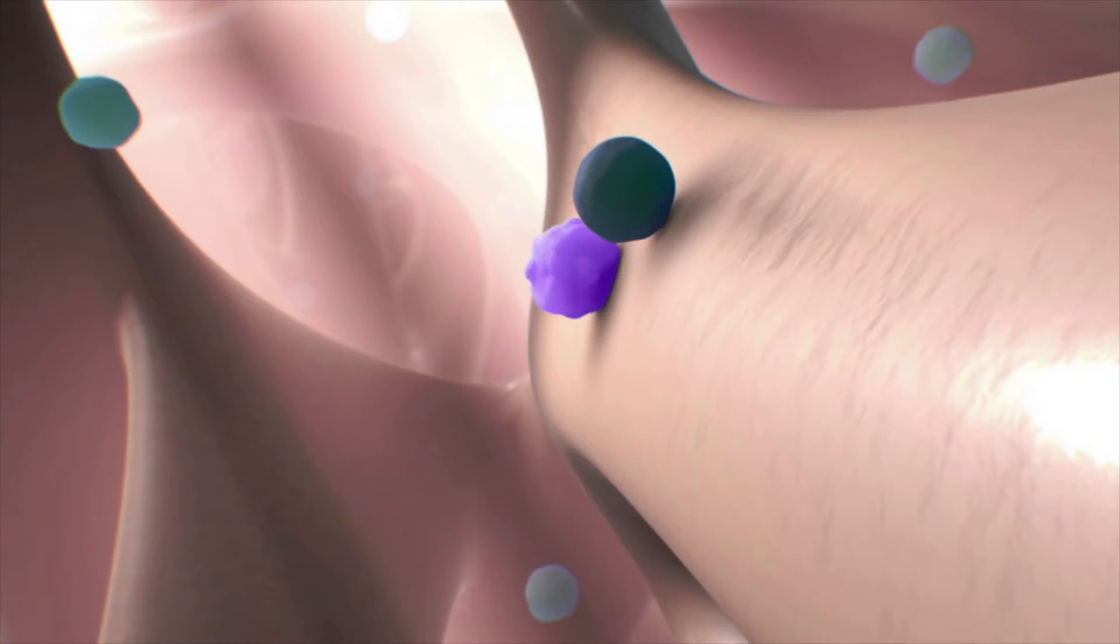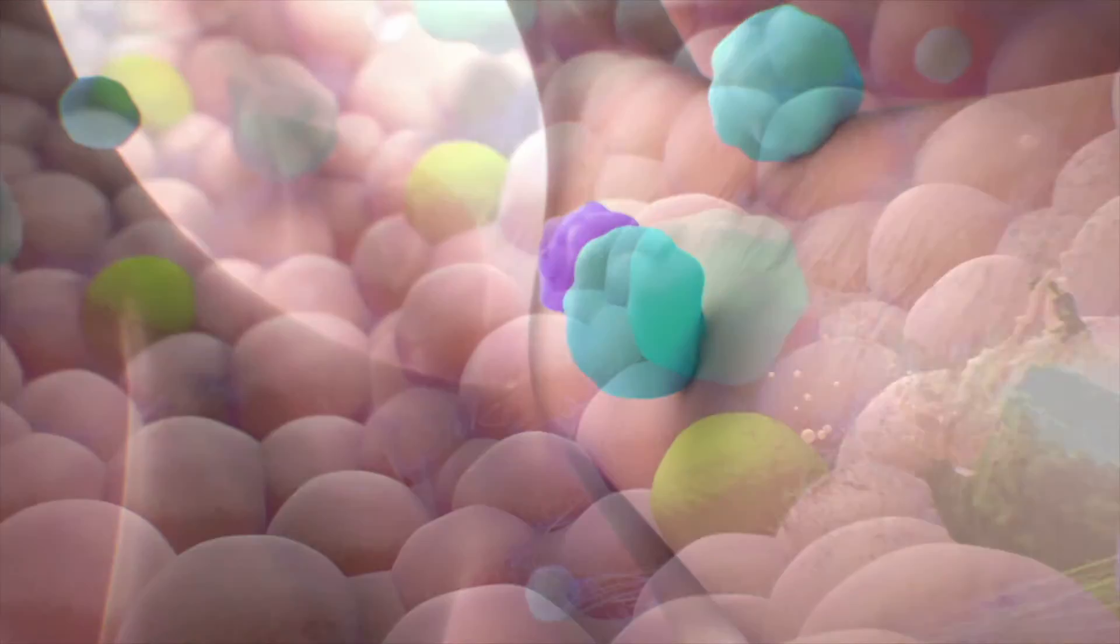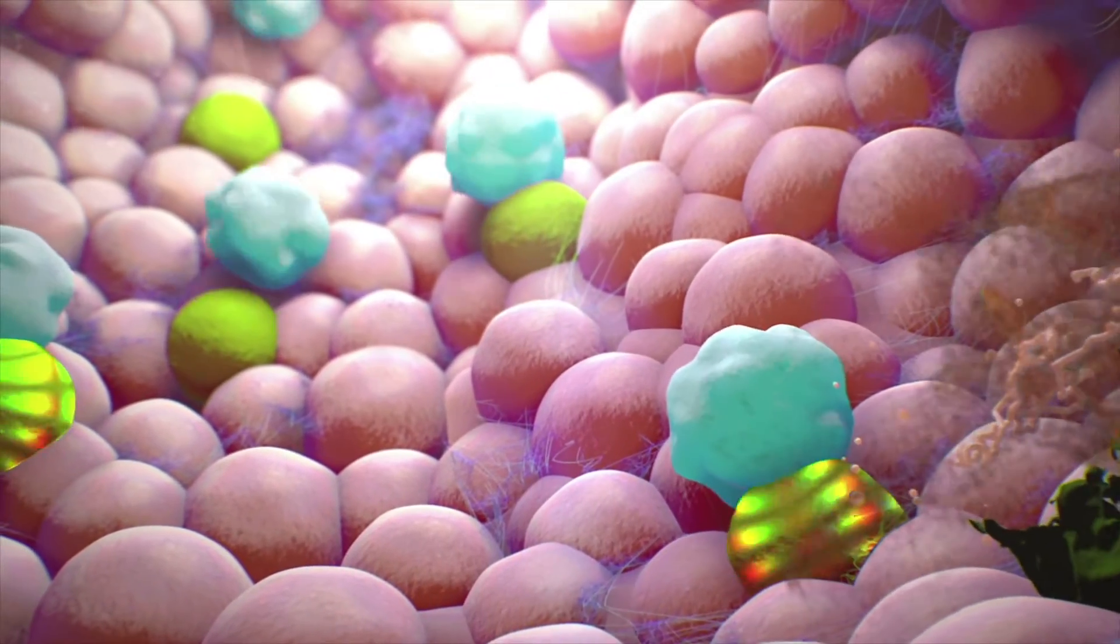When another immune cell alerts them that it has encountered a cell infected with a virus or that has become cancerous, the memory T cell activates to form cytotoxic T cells, which then hunt for the diseased cells.